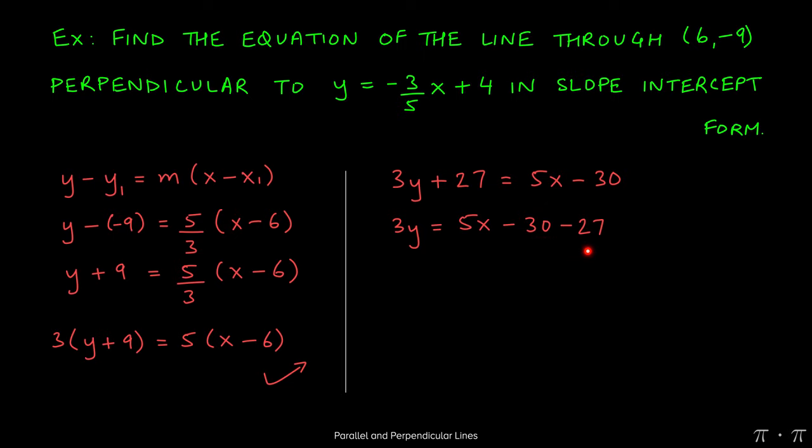We can combine like terms and get 3y = 5x - 57, which comes from -30 - 27. And lastly, the finishing touch is to get rid of this 3. So we divide the 3 over to the other side, or we can say that we divide each term of the equation by 3.